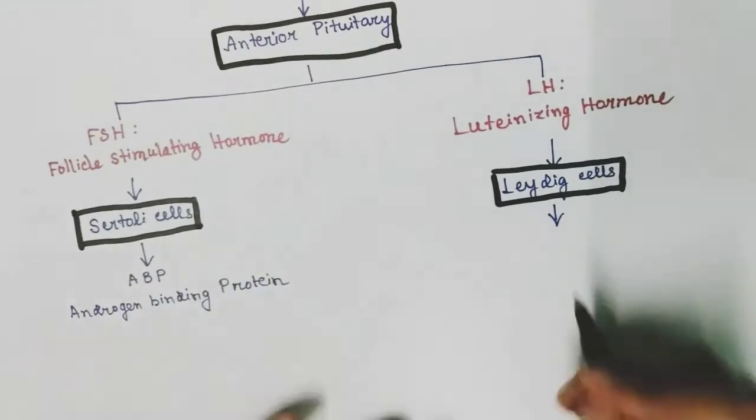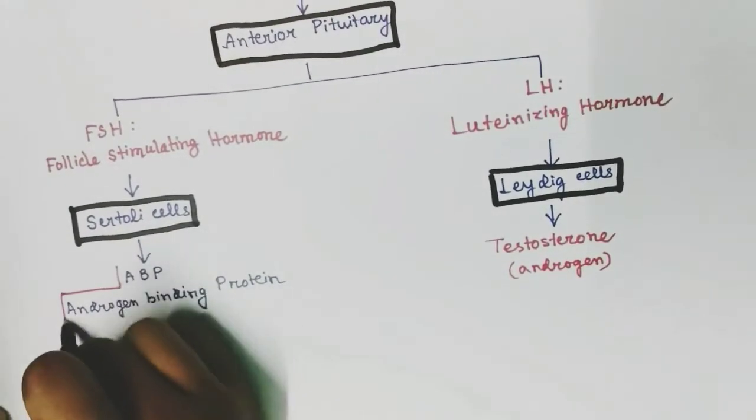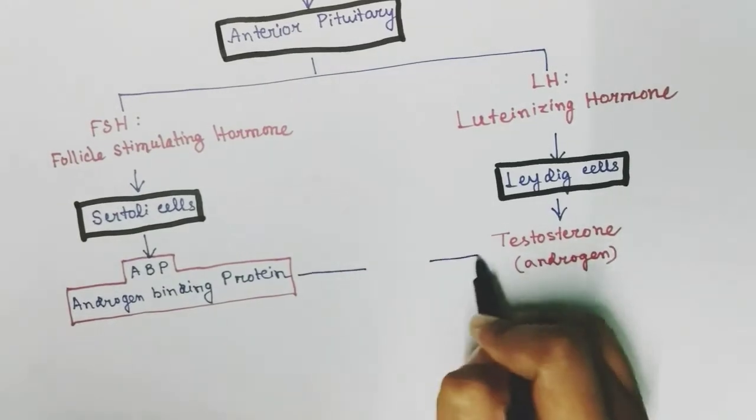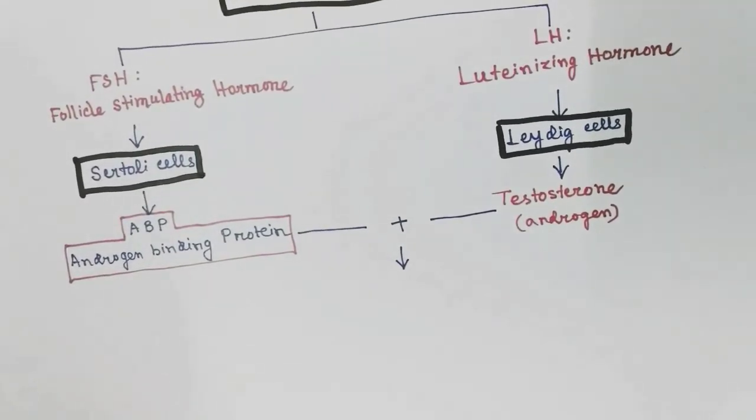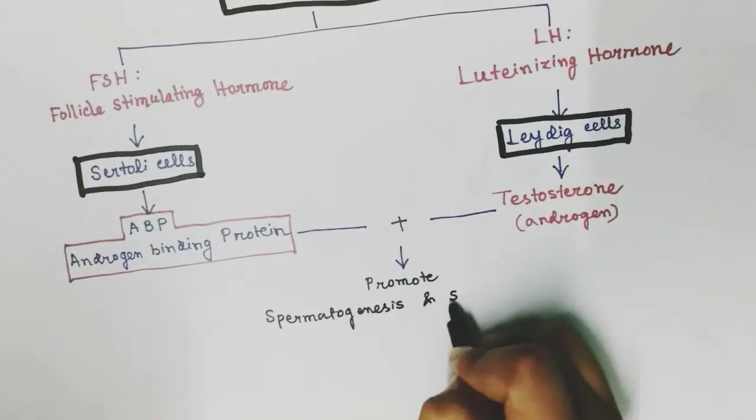By the effect of LH hormone, leydig cells release testosterone which is an androgen. The androgen testosterone binds with the androgen binding protein and together promotes the spermatogenesis as well as spermiogenesis process in the testes.